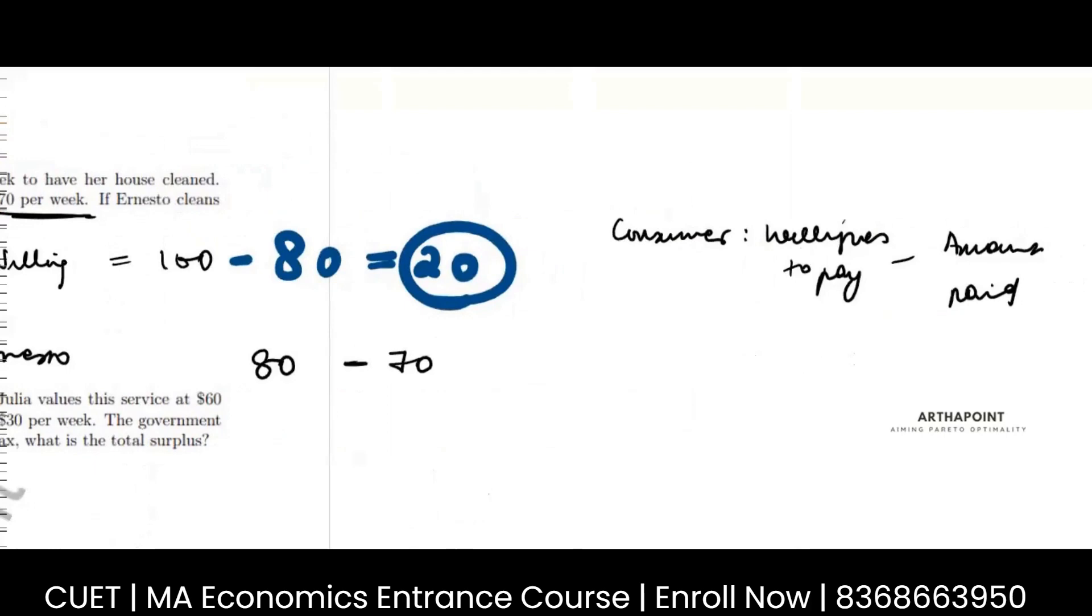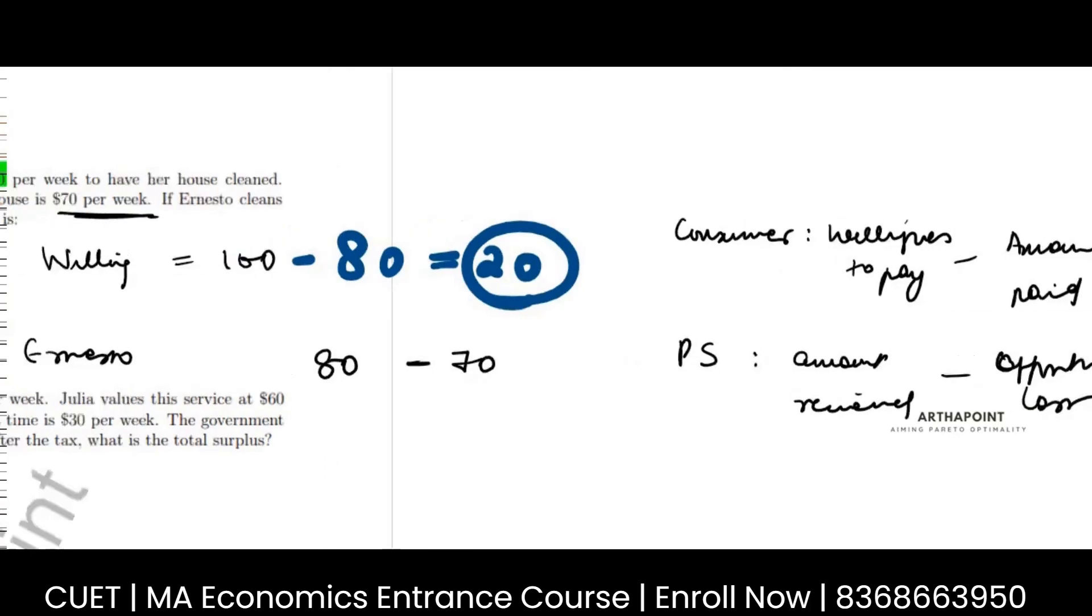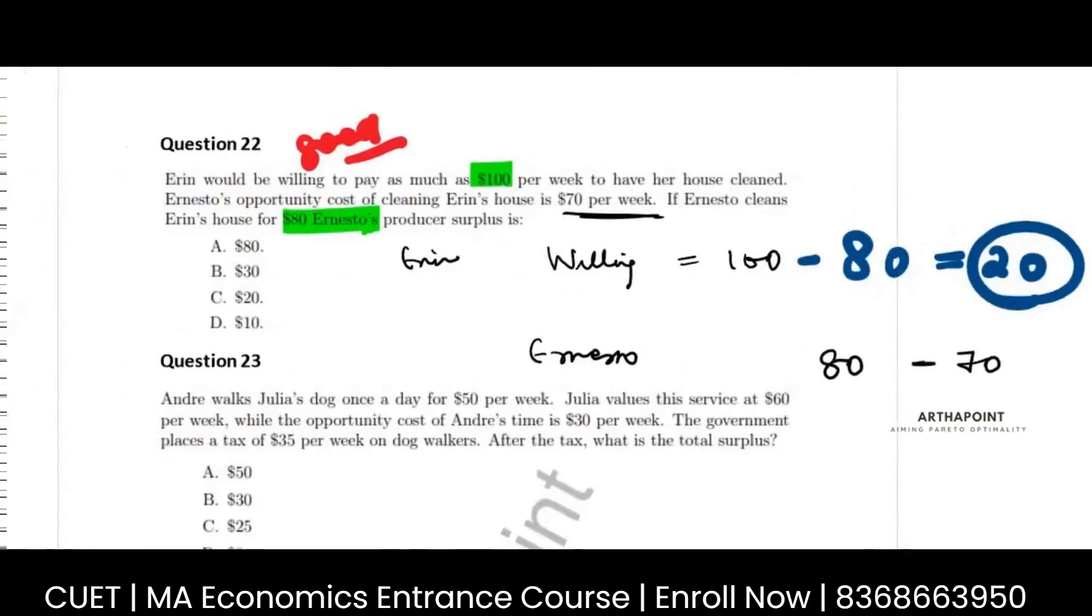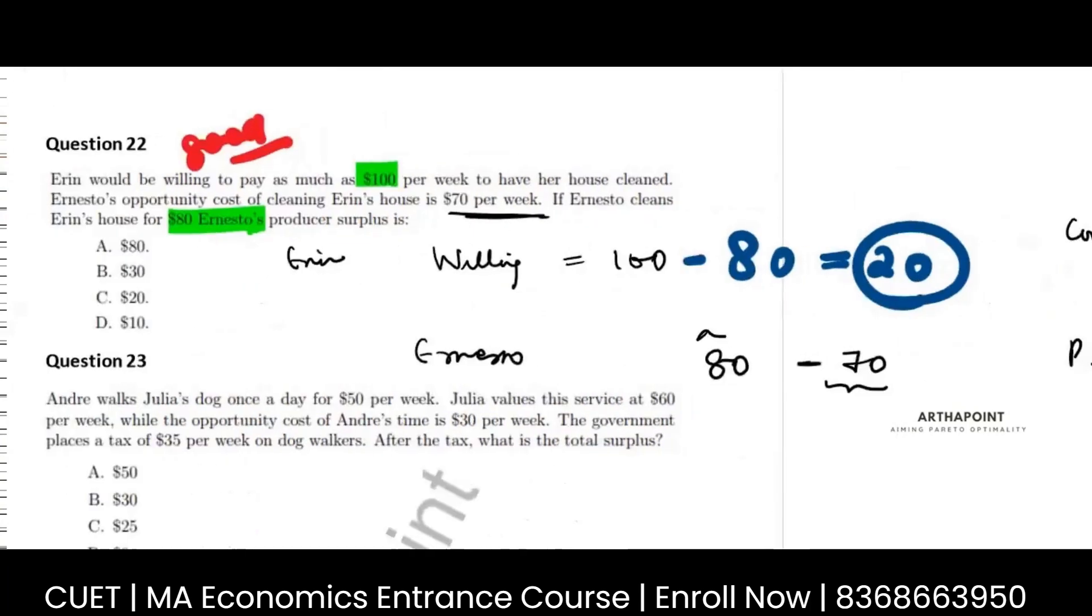Producer surplus is amount received minus the willingness to work for, which means the opportunity cost at what you will work. So he could have worked for anything above 70 and he got 80 for his services. So he earned 10 more. So this is his producer surplus. Producer is 10.